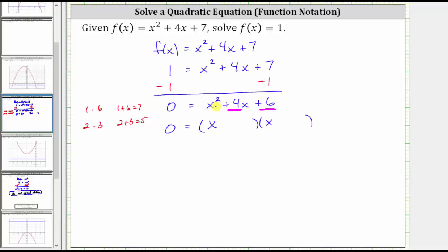Which means the right side of this equation does not factor, and when this occurs, this means there are no real rational solutions to the equation. So when we're asked to solve f of x equals one, based upon what we know, we can only say at this point, there are no real rational solutions.